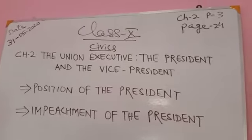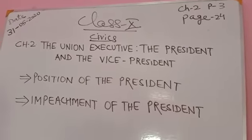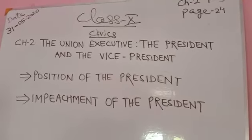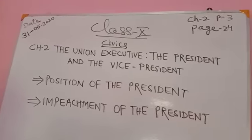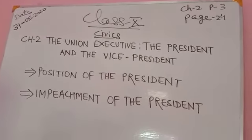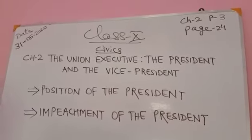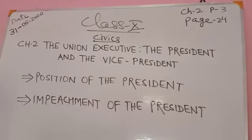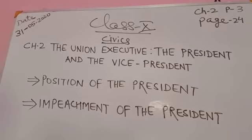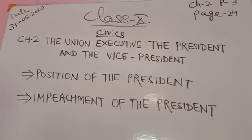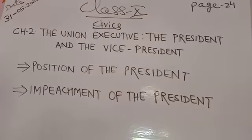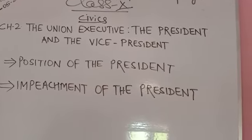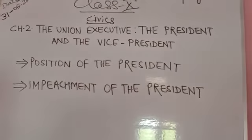According to Article 57 of the Constitution, the president is eligible for re-election to that office. Dr. Rajendra Prasad, the first president of India, is the only president who enjoyed two successive terms of office. His tenure in office lasted from January 26, 1952 to May 1962.